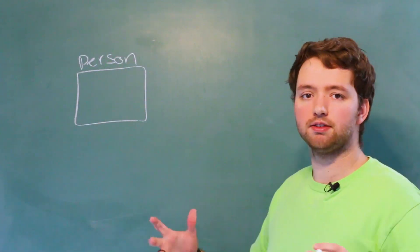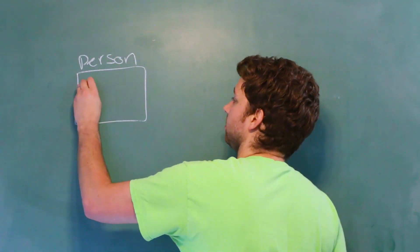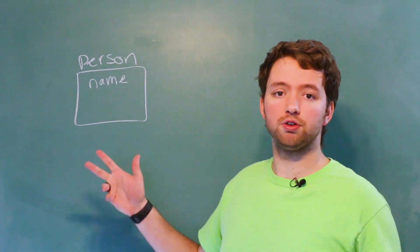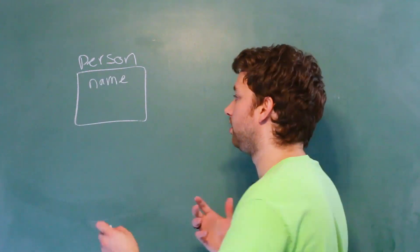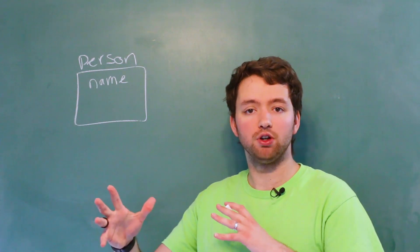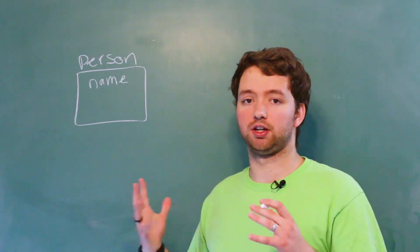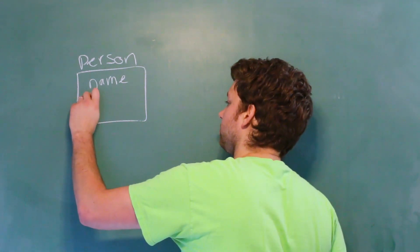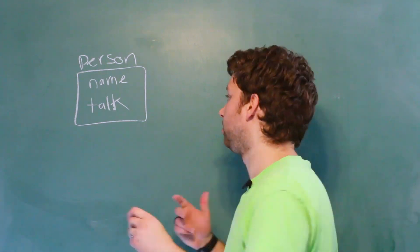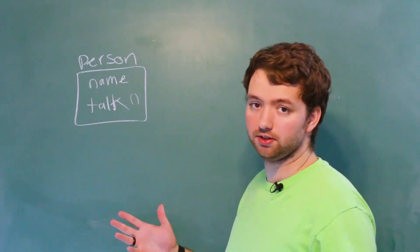We might have some class, and this class can have fields such as a name, and it can also have what are known as methods, which basically define some behavior or something that each object can do, and you would invoke this with parentheses when you use it.